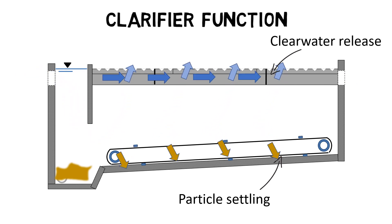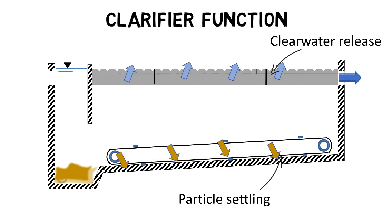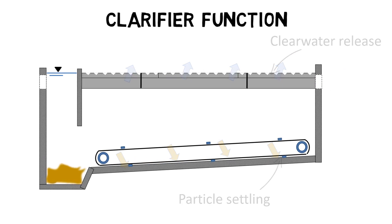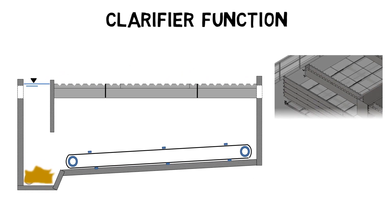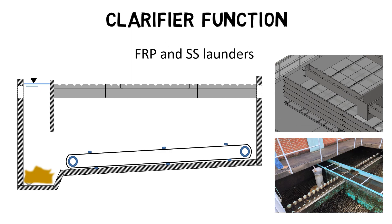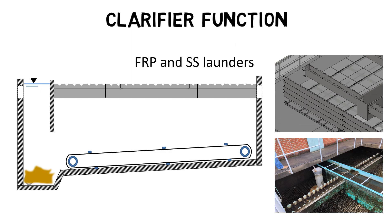Effluent launders are usually rectangular or circular troughs with overflow weirs and are made of stainless steel or FRP.